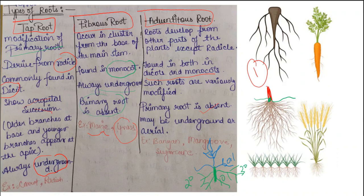Looking at the diagram, the first root diagram shows the tap root system, where the dominantly visible primary root has secondary and tertiary roots arising from it. The other diagrams show the fibrous type of root system.